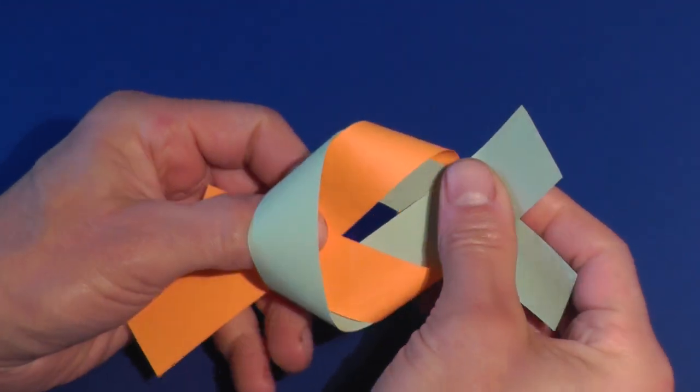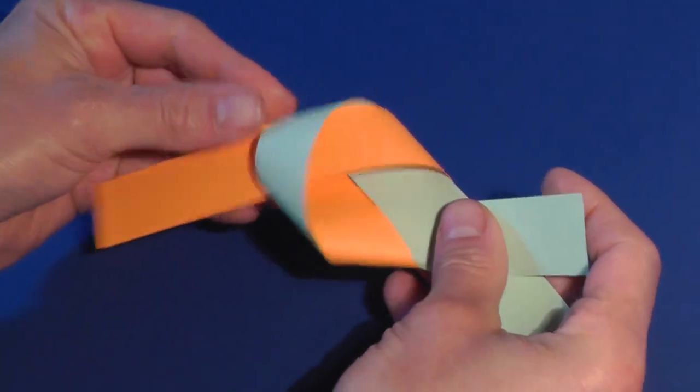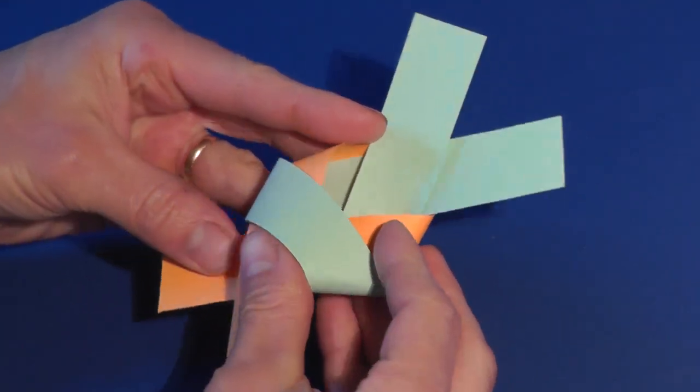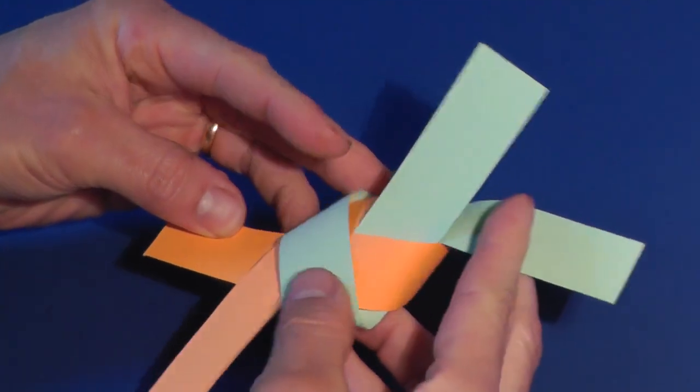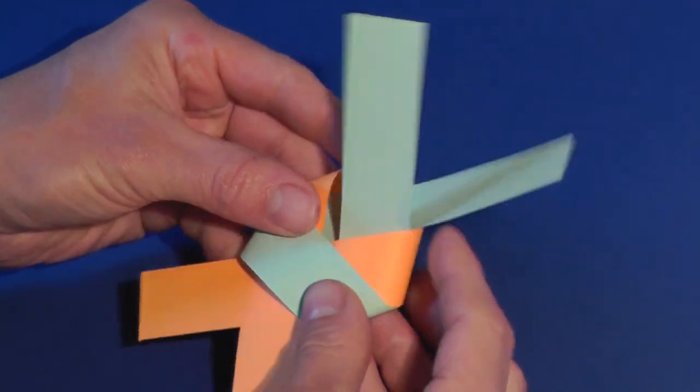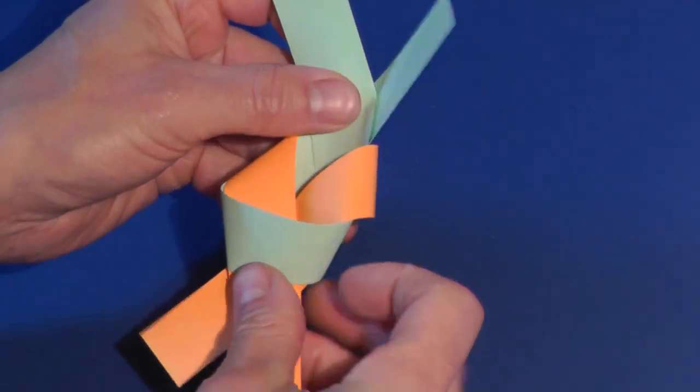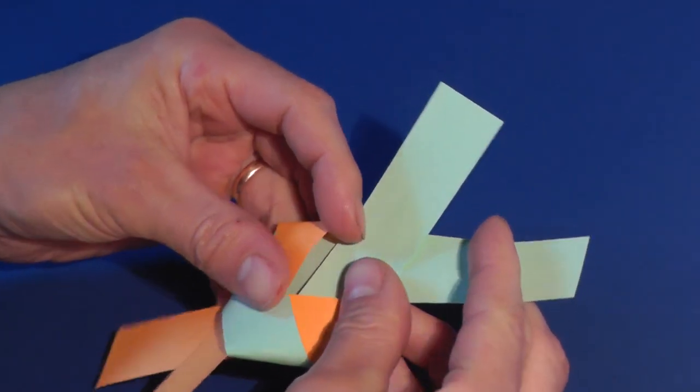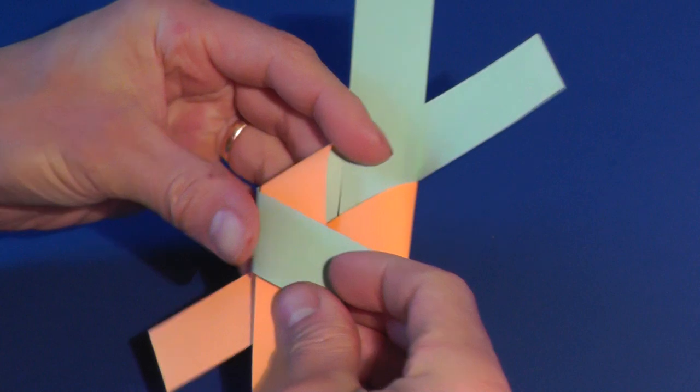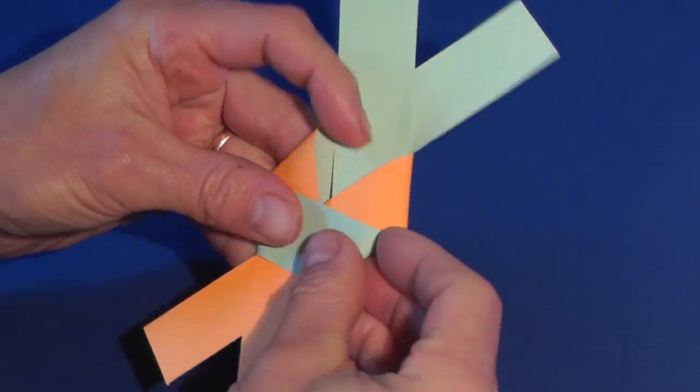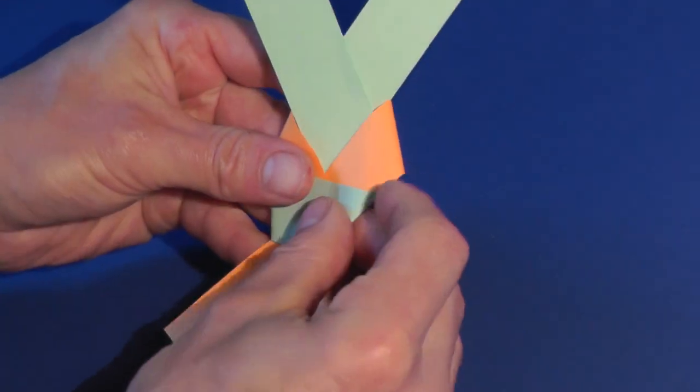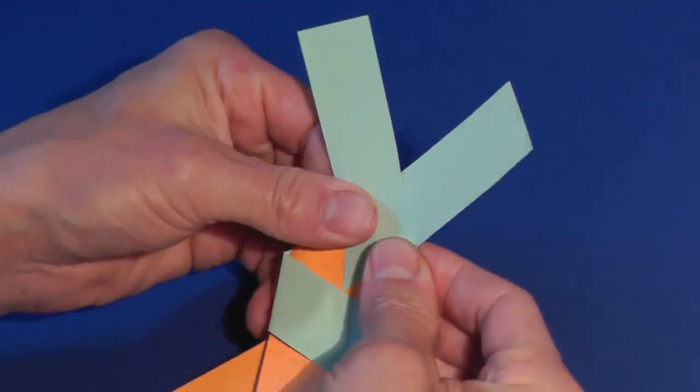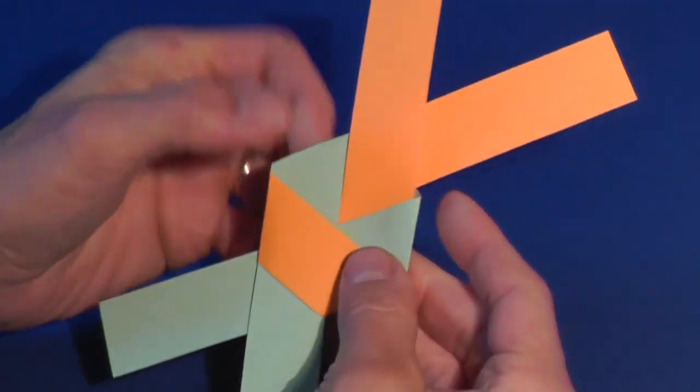Again, carefully pull the knot tight and flatten. This is a hexagon. Anybody want to try tying a heptagon?